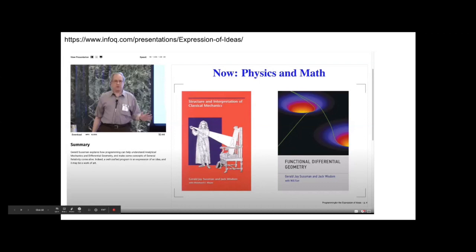This next clip is Dr. Gerald Sussman — who is actually in the audience, which is cool — talking about using programming to precisely define physics. In physics, mathematical notation isn't used in a very precise way; you have to learn what the symbols mean culturally. They're not used the same way as in math, and depending on the formula the same symbols are used in different ways.